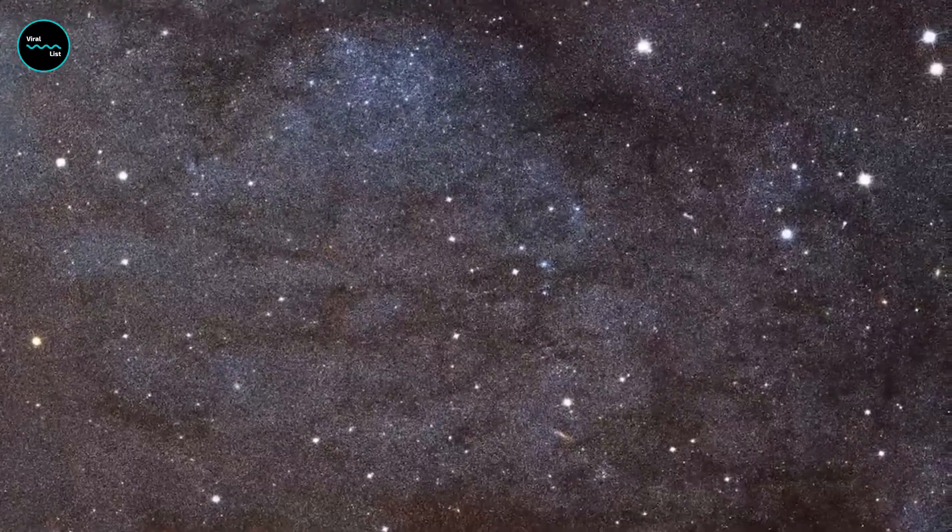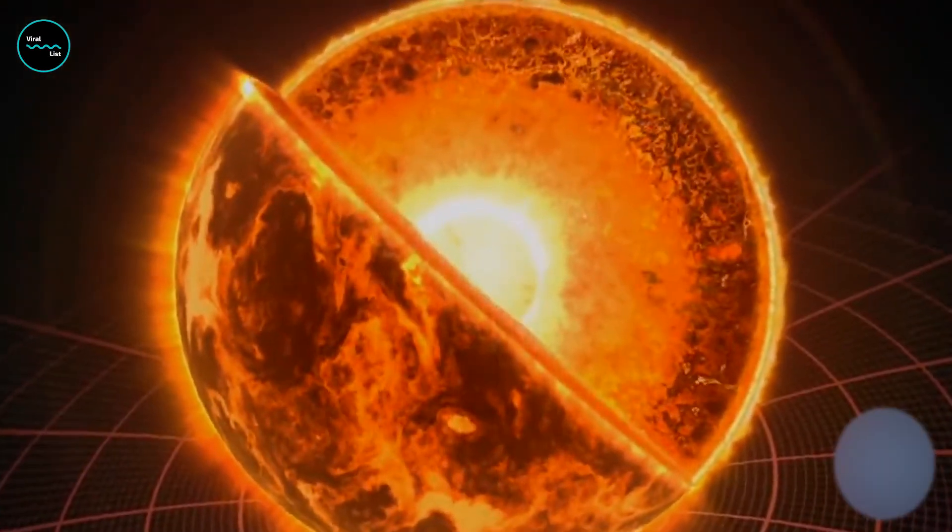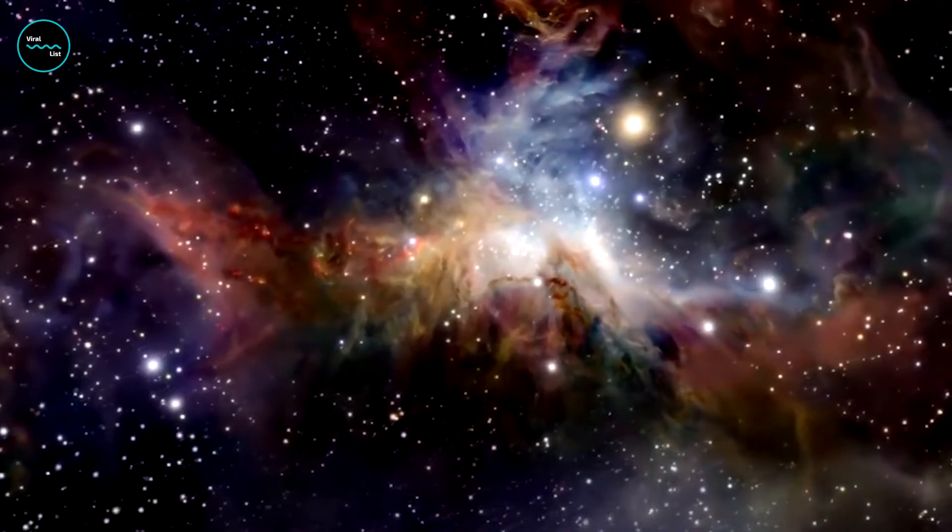The sun is one of more than 100 billion stars in the Milky Way. It orbits some 25,000 light-years from the galactic core, completing a revolution once every 250 million years or so.